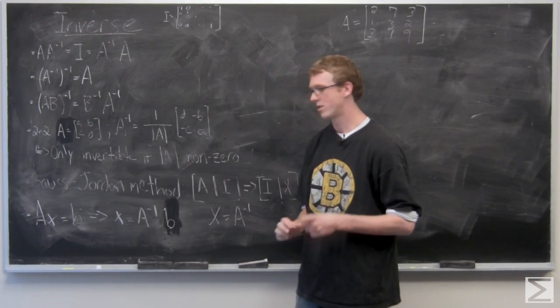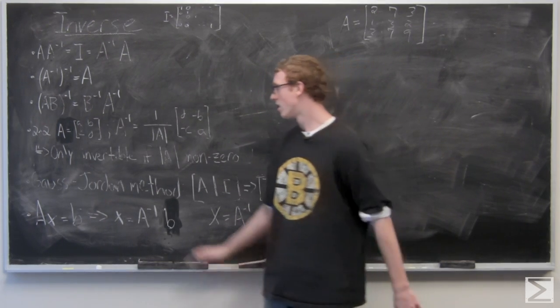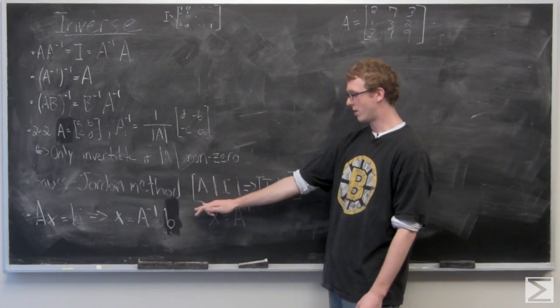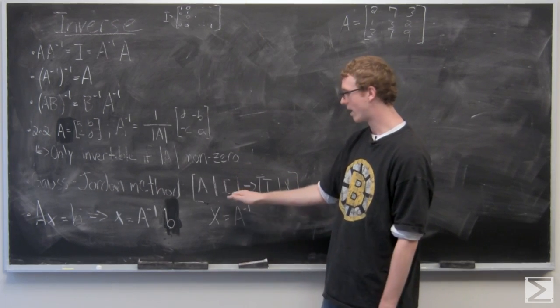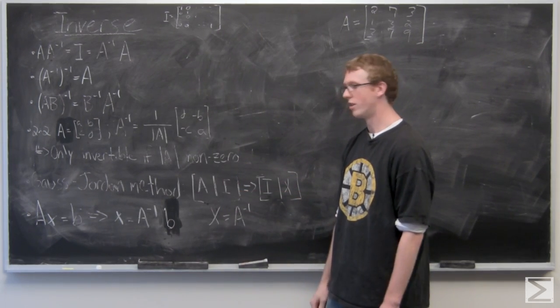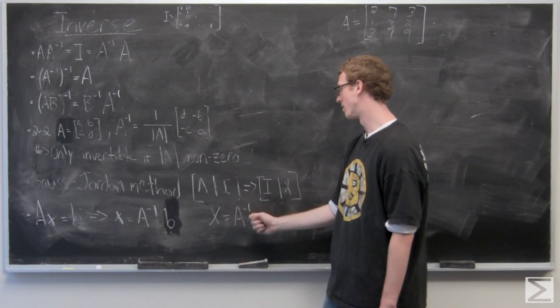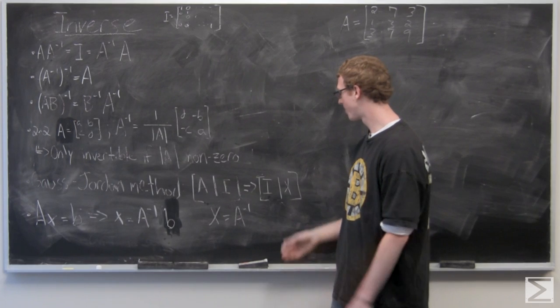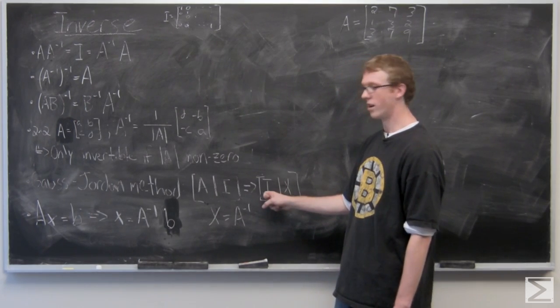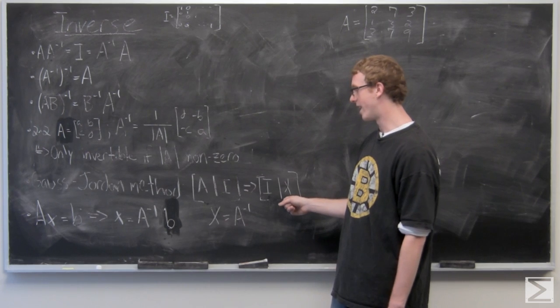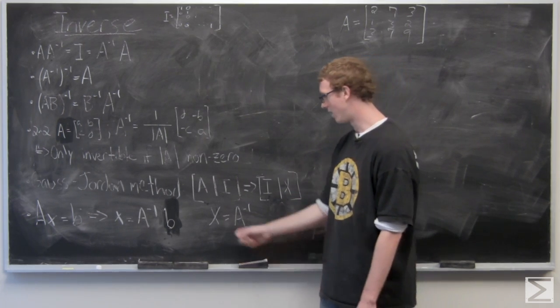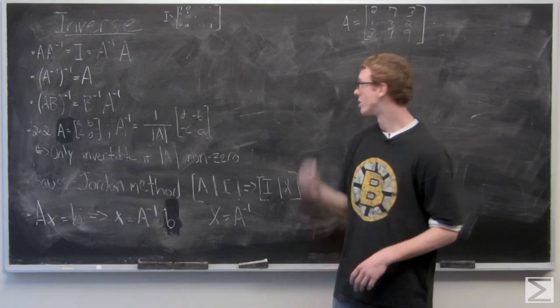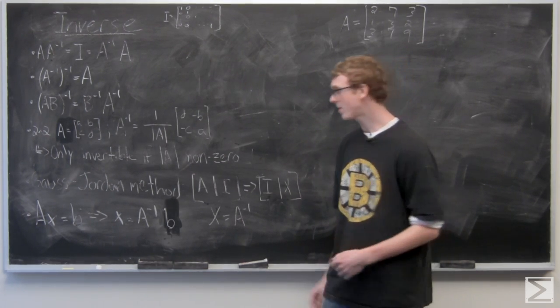We're going to take a look at a 3 by 3 matrix now. It's a little bit more difficult to find the inverse of. We're going to use what's called the Gauss-Jordan method, where you set up a matrix on the left and then a line in the middle, and then you have the identity matrix on the right. So on the right it's just all zeros, and then you can use elementary row operations, which we looked at earlier, to get to the identity matrix on the left side and X on the right side. And your new matrix X on that right side is going to be the inverse of A.